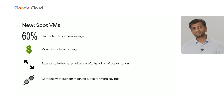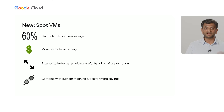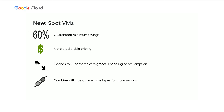Another new feature is our Spot VMs — a new and enhanced version of our preemptible VMs, which allow you to use our infrastructure when it is not being used by us, at very attractive price points. We guarantee 60% minimum savings, which we believe is one of the most compelling price points in the market. And more importantly, this pricing is predictable. Where competitors' prices for this VM type may vary every five minutes, our Spot VM pricing varies no more frequently than once a month.